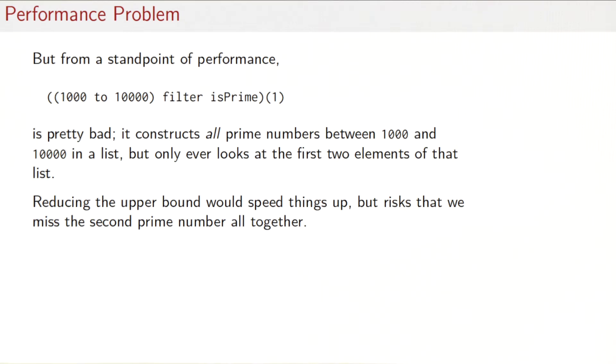However, the shorter expression also has a serious problem. Its evaluation is very inefficient because what we do here is we construct all the prime numbers between 1000 and 10,000 only ever to take its second elements. Presumably there are many more prime numbers between 1000 and 10,000.